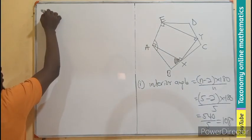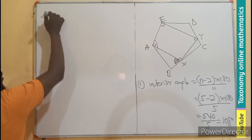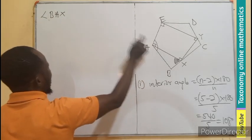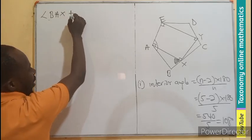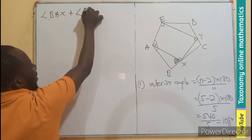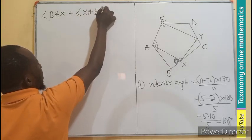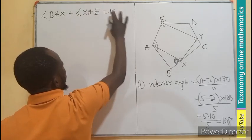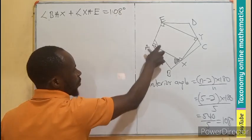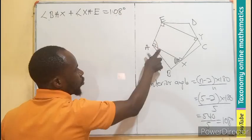So 90 plus this must give us 108. So now let's describe this angle. We know angle BAX, this corner, plus the angle we are having, XAE, equals to 108.